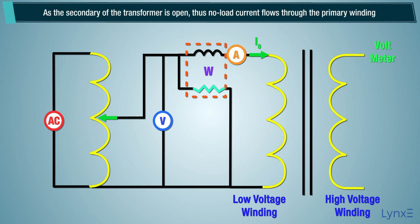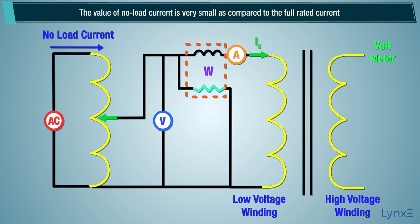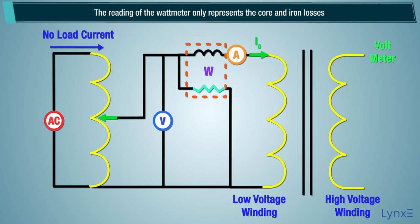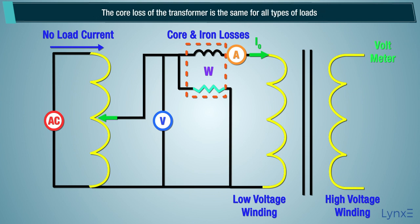As the secondary of the transformer is open, no-load current flows through the primary winding. The value of no-load current is very small as compared to the full rated current. The copper loss occurs only on the primary winding of the transformer because the secondary winding is open. The reading of the wattmeter only represents the core and iron losses. The core loss of the transformer is the same for all types of loads.